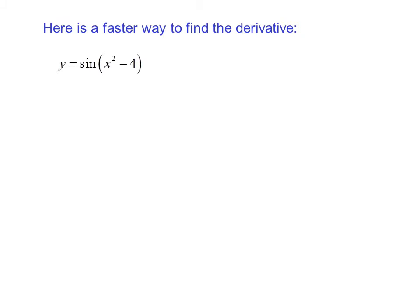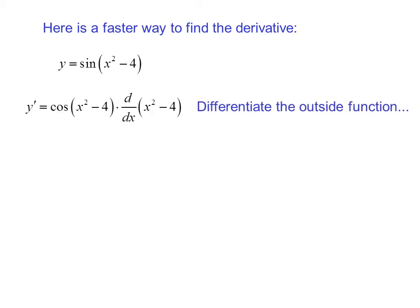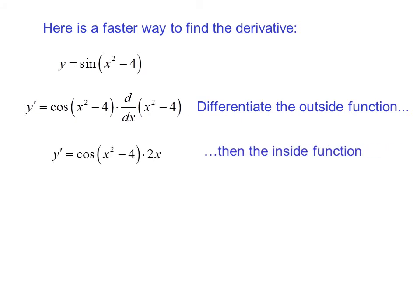Here is a faster way to find the derivative: y equals sin(x squared minus 4). y′ equals cosine(x squared minus 4) times the derivative with respect to x of (x squared minus 4). We differentiated the outside function — sine becomes cosine — then multiply by the derivative of the inside function. At x equals 2, y′ equals 4.